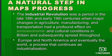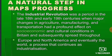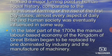The Industrial Revolution was a period in the late 18th and early 19th centuries when major changes in agriculture, manufacturing, and transportation had a profound effect on socio-economic and cultural conditions in Britain, and subsequently spread throughout Europe, North America, and eventually the world — a process that continues as industrialization. It marked a major turning point in human social history, comparable to the invention of farming or the rise of the first city-states.